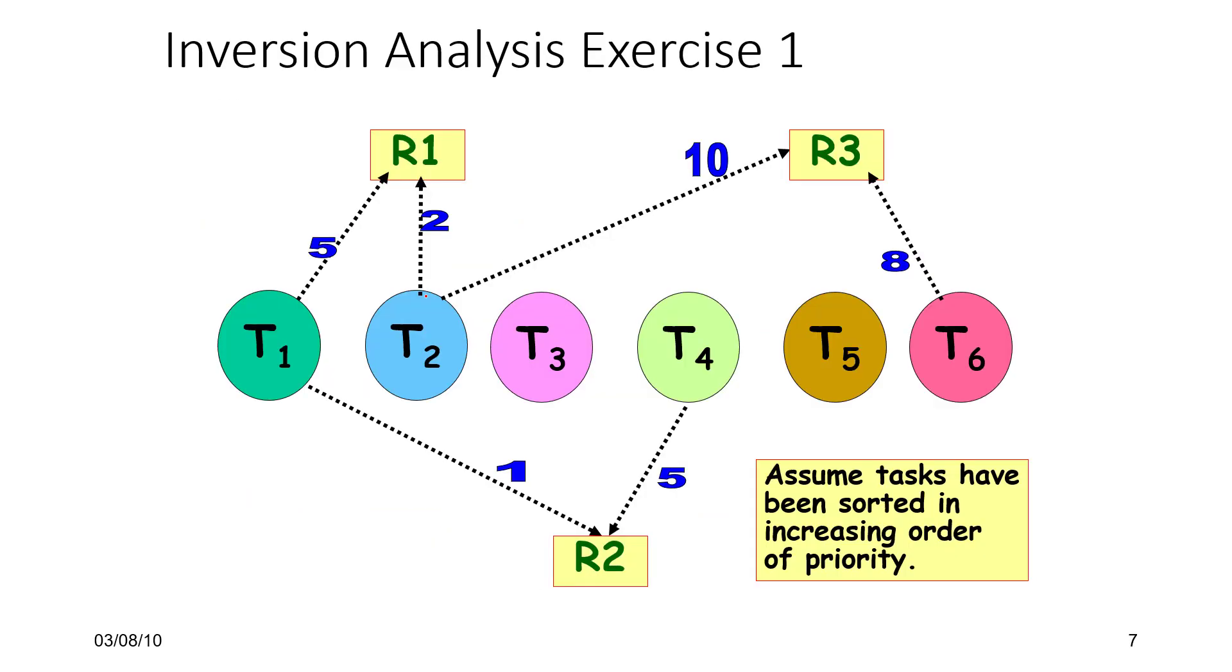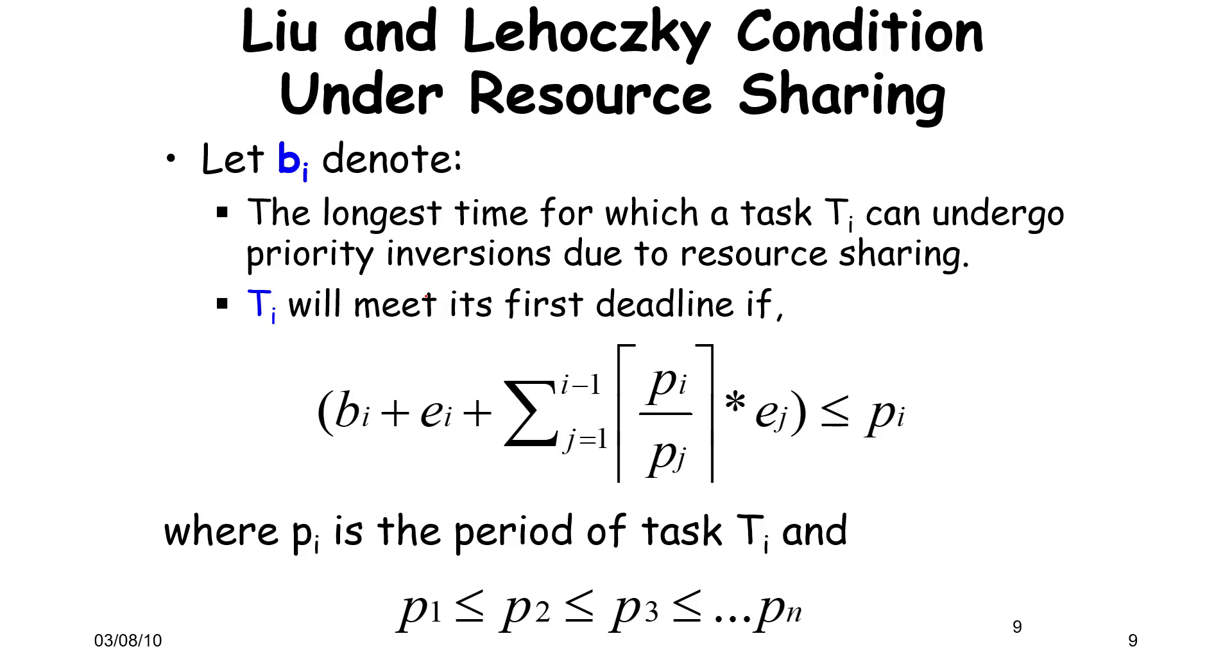If we take a look at the same example with different resources, we can again reason about it. This is an inversion analysis. I'll skip these and come directly to the Liu and Lehoczky's condition under resource sharing. Let the term bi denote the longest time for which a task Ti can undergo priority inversions because of resource sharing, which we have said is we take all three tables, take the ith row, and compute the maximum.